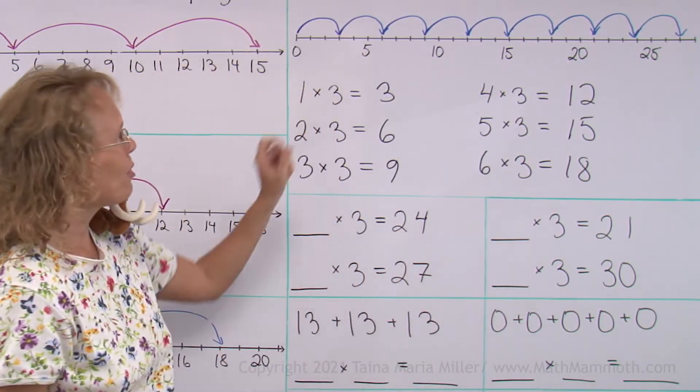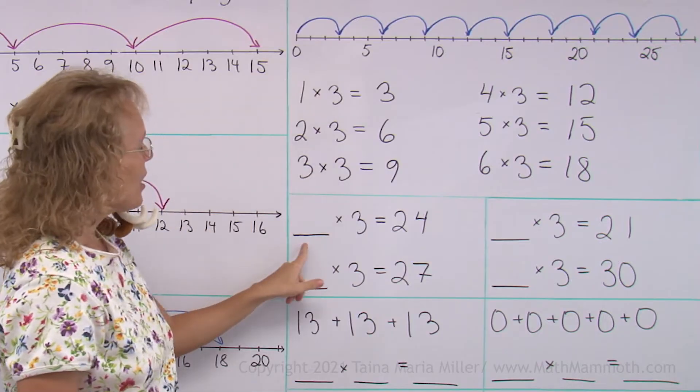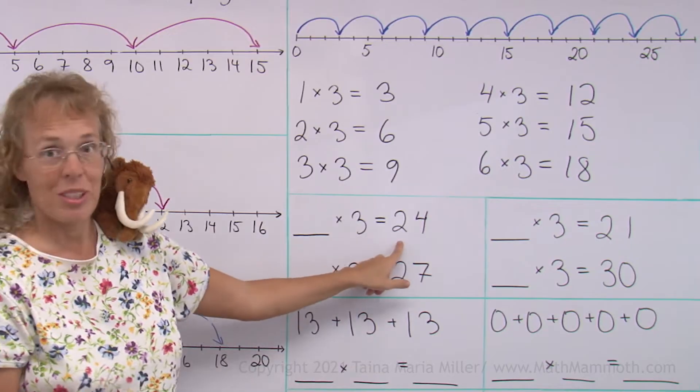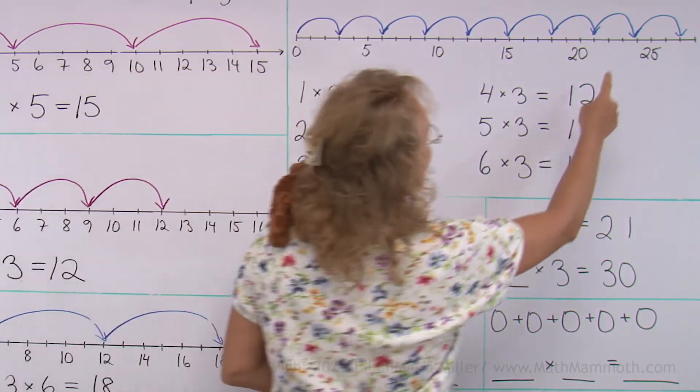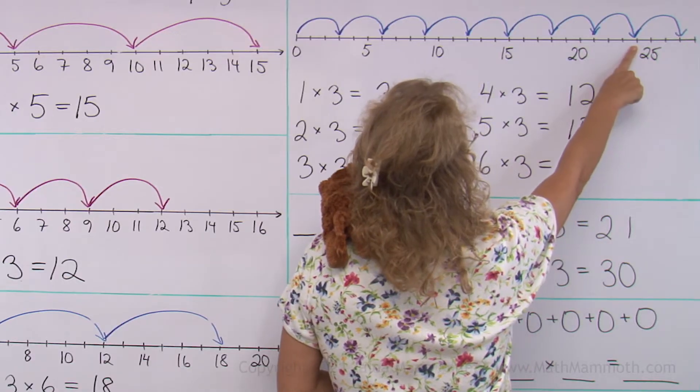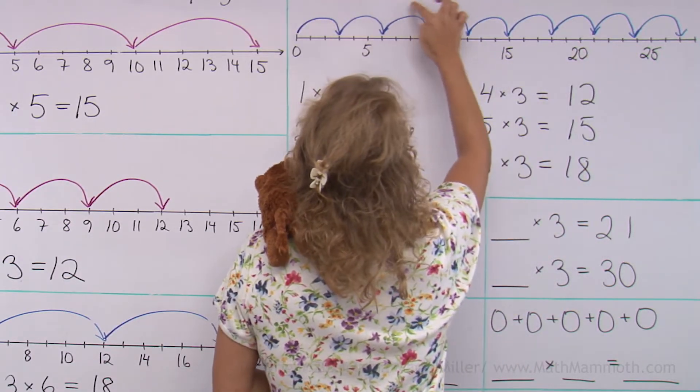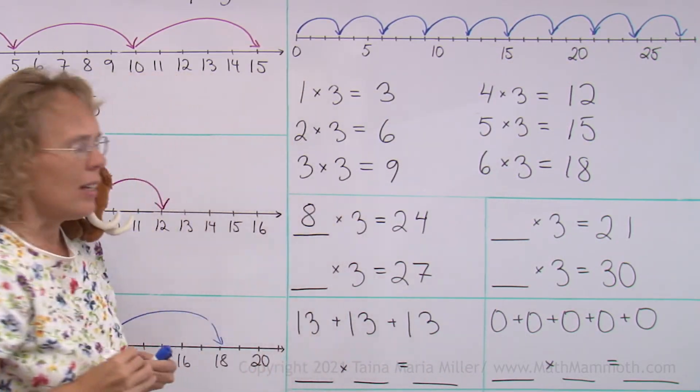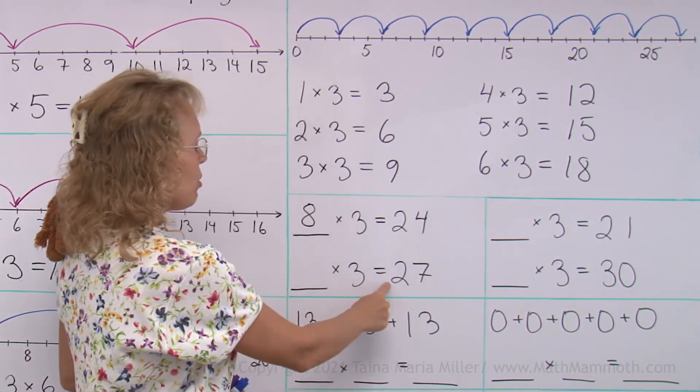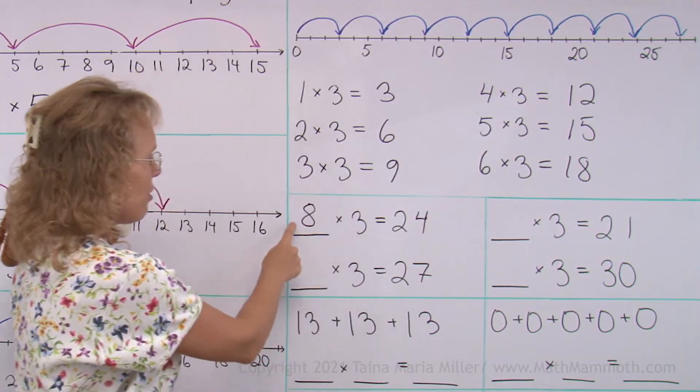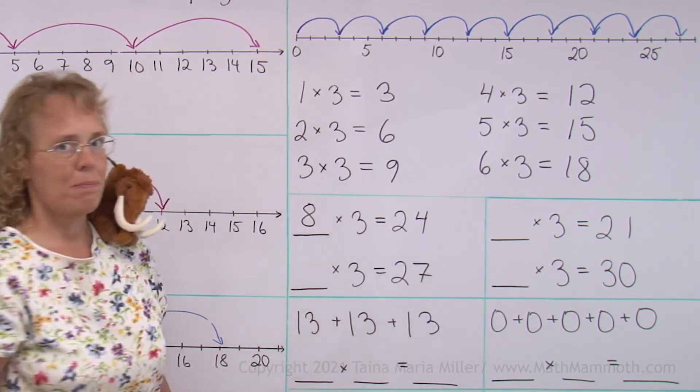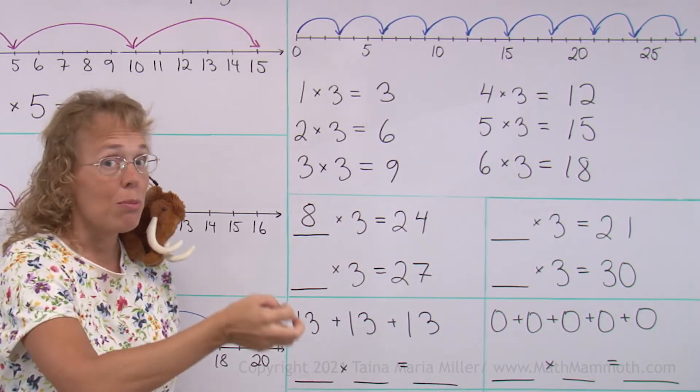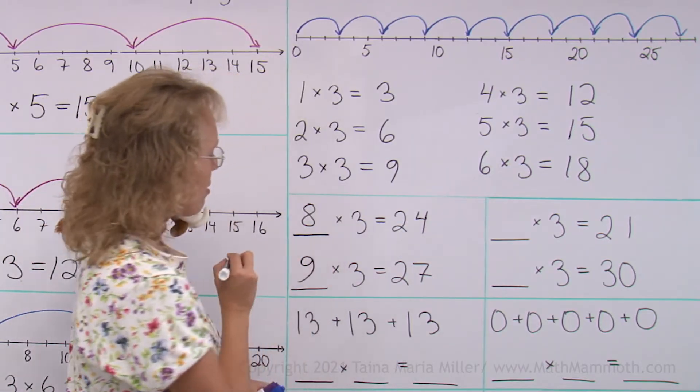These problems also have to do with this picture here. This is basically saying, how many jumps of three do you need to get to twenty-four? Twenty-four is over here. So how many jumps to get over there? Can you count? One, two, three, four, five, six, seven, eight jumps. How about how many jumps of three would you need to get to twenty-seven? Look here. If eight jumps takes you to twenty-four, then how many jumps of three would take you to twenty-seven? It's just one jump more, right? Nine. Nine times three equals twenty-seven.